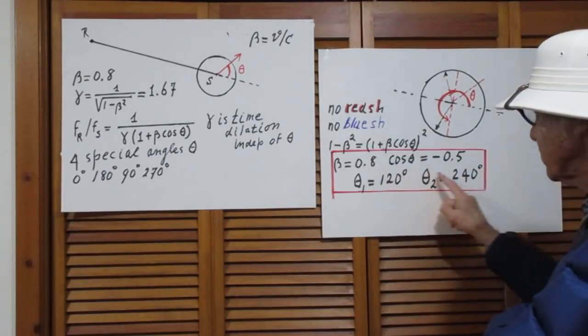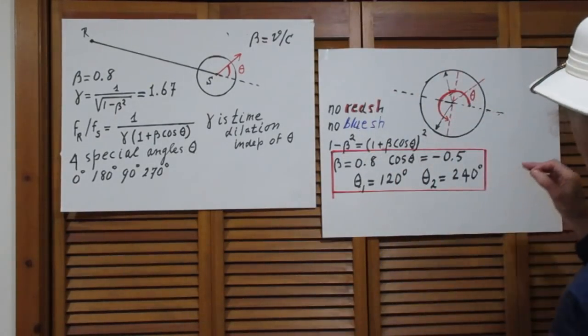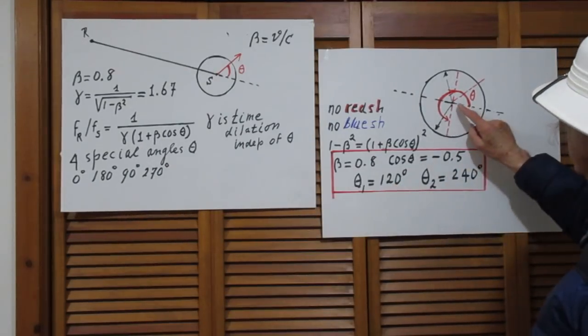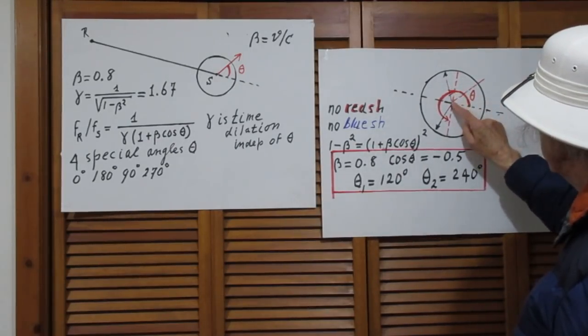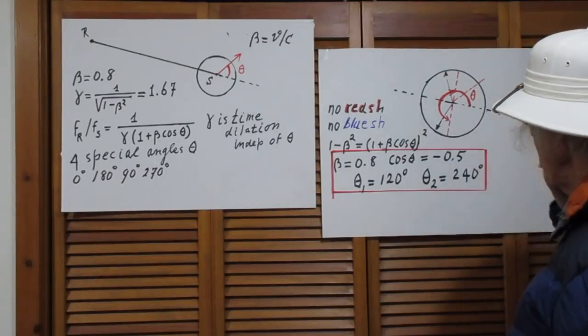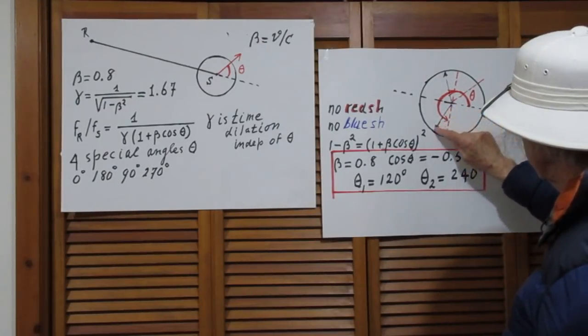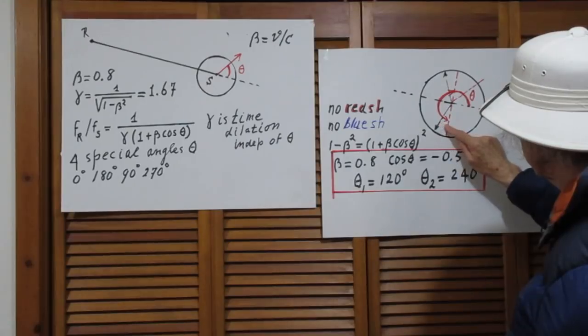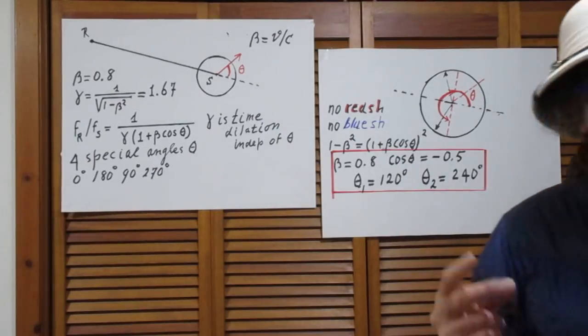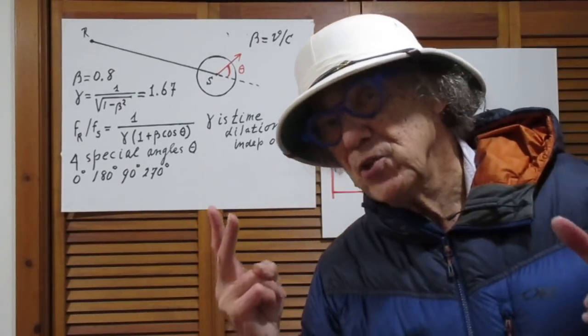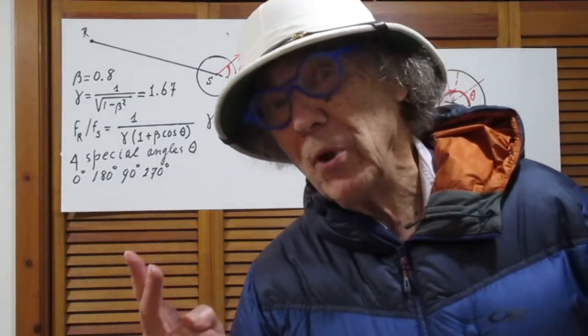Therefore, there are two angles for which there is neither blue shift nor red shift, and that is at 120 degrees. I have it here. You see, this is 90 degrees. If this is 30 degrees, then this is 120 degrees. But the cosine of 240 degrees is also minus 0.5. That is when this angle here is 30 degrees. So this one is then 240 degrees. So yes, there are two angles for which there is no blue shift and no red shift, and only eight people have that correct.